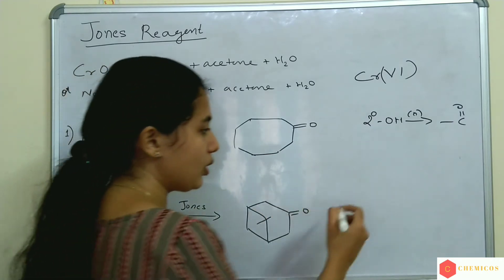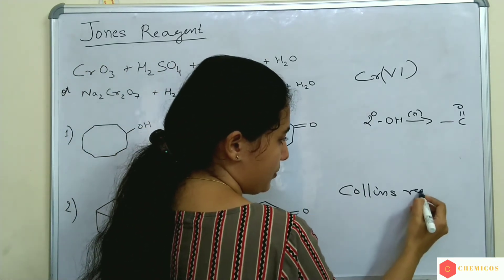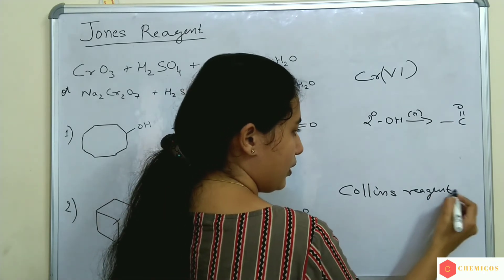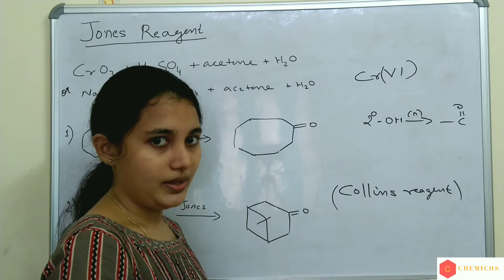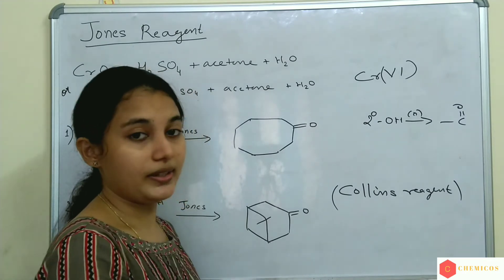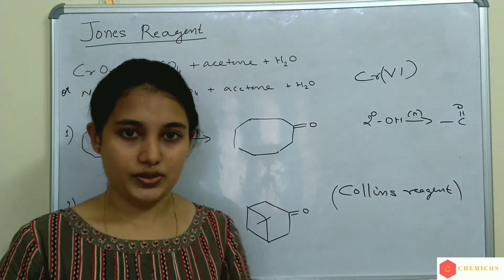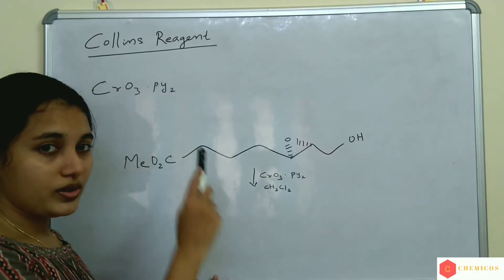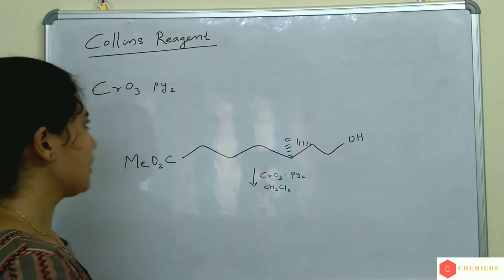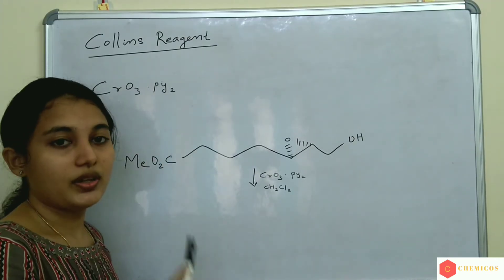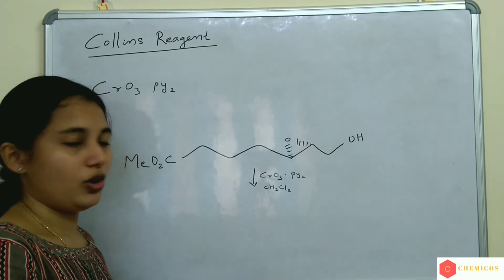Another reagent called Collins' Reagent. Collins' Reagent is made with CrO3. Collins' Reagent can oxidize compounds containing acid sensitive groups also.